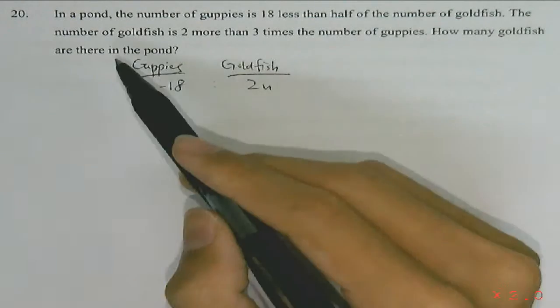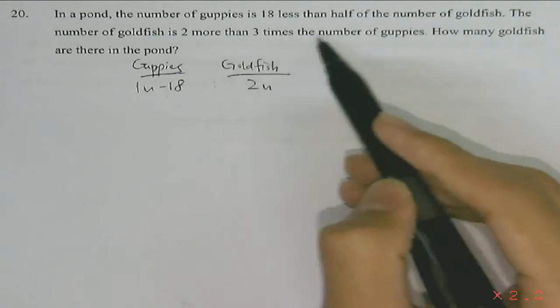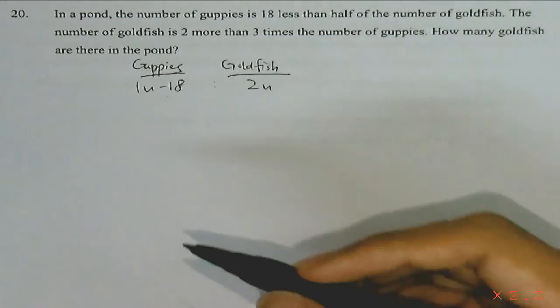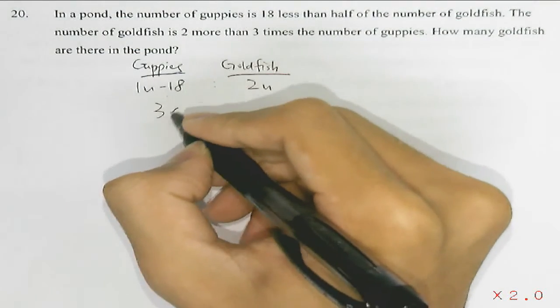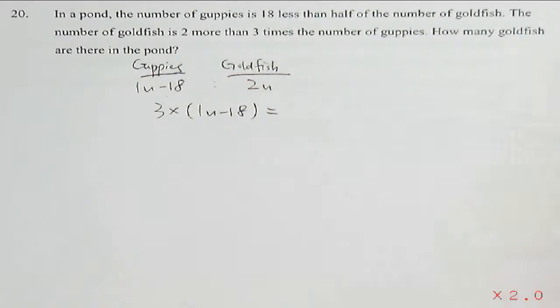The question also tells us the number of goldfish is 2 more than 3 times the number of guppies. So to find 3 times the number of guppies, there will be 3 multiplying by 1 unit minus 18.